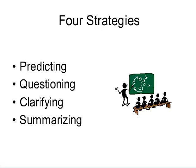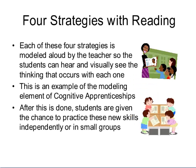The four main strategies used in Reciprocal Teaching to increase students' reading comprehension are predicting, questioning, clarifying, and summarizing. Each of these four strategies is modeled aloud by the teacher so the students can hear and visually see the thinking that occurs with each one. This is an example of the modeling element also found in cognitive apprenticeships. After this is done, students are given the chance to practice these skills independently or in small groups.